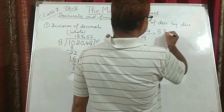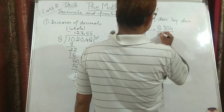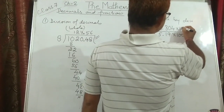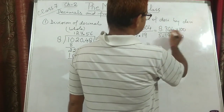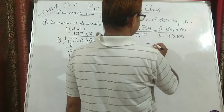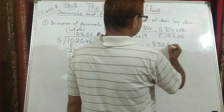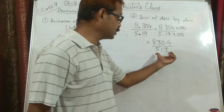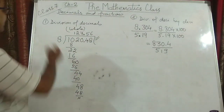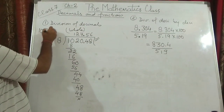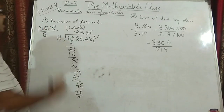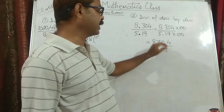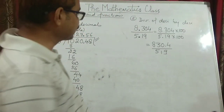So I will multiply 8.304 upon 5.19 by 100 over 100. If I multiply 5.19 by 100, I get 519 — a whole number. The numerator is also multiplied by 100, so the decimal shifts two places to the right, giving 830.4 upon 519. Now this question converts to the same form: 1020.48 divided by 8. You divide 519 into 830.4 and whatever the value is, that will be the answer.